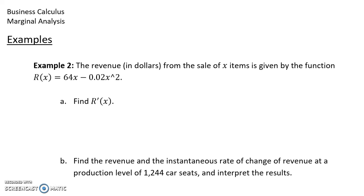So in our second example, we have the revenue from the sale of x items is given by the function R(x) equals 64x minus, and let's make a correction here, that should be 0.02x squared.